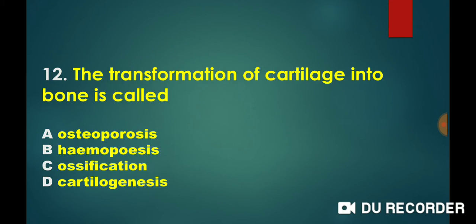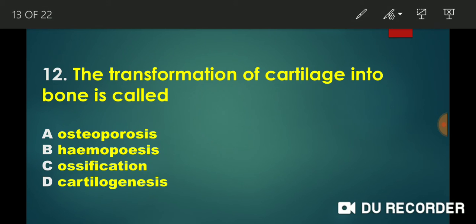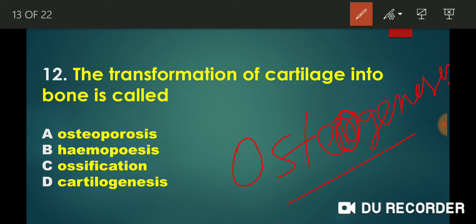The transformation of cartilage into bone is called osteogenesis. Osteogenesis is also known as ossification. So the process of transformation of cartilage into bone is called osteogenesis or ossification.